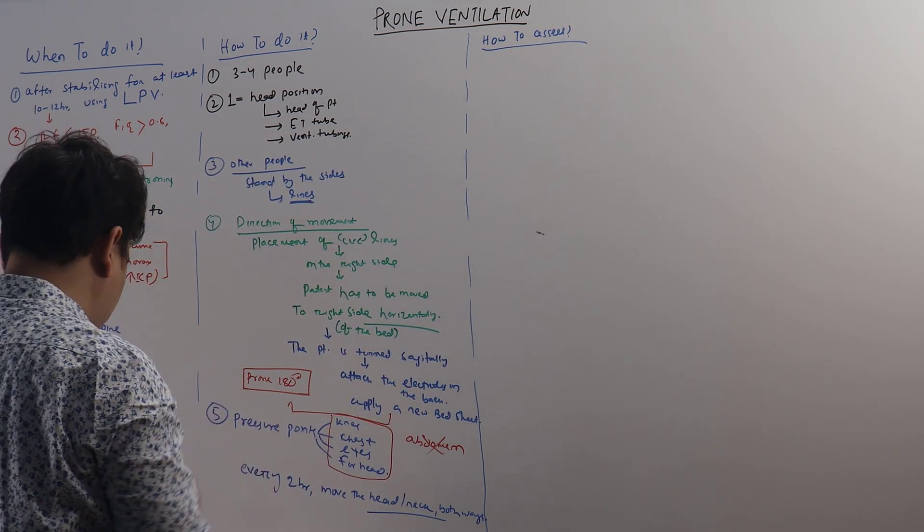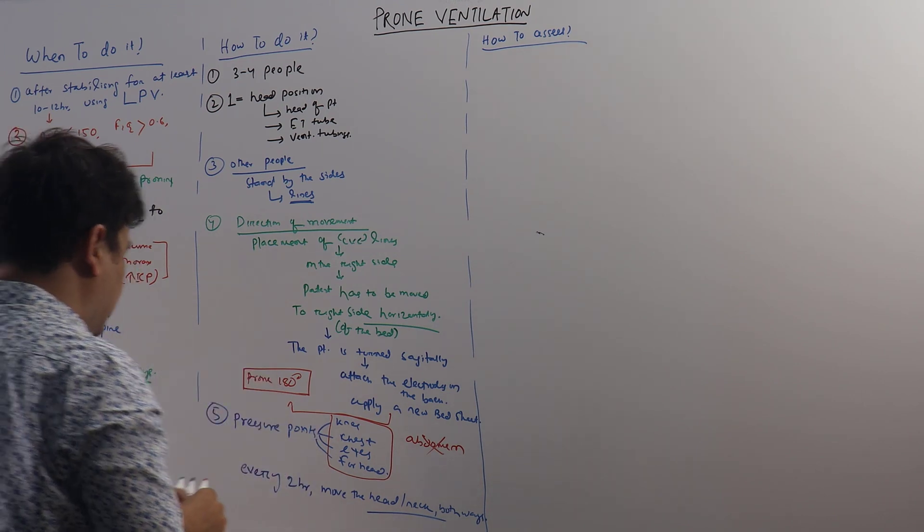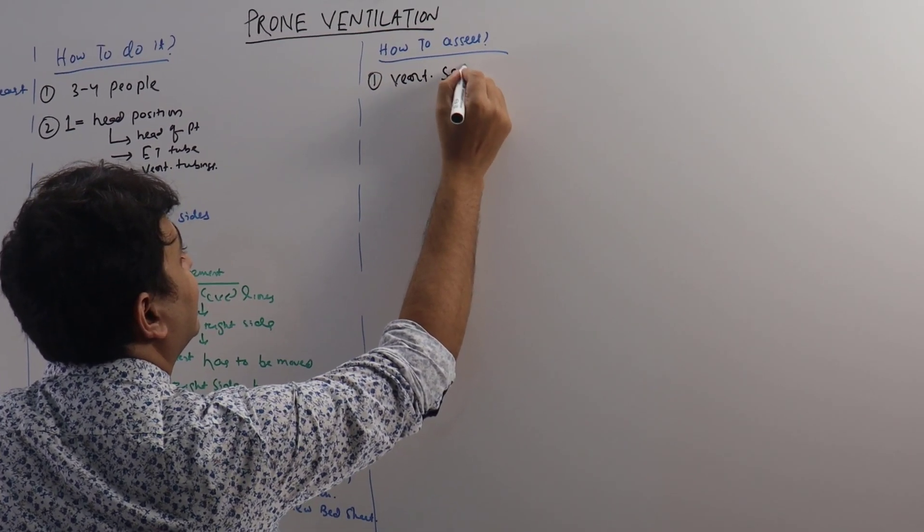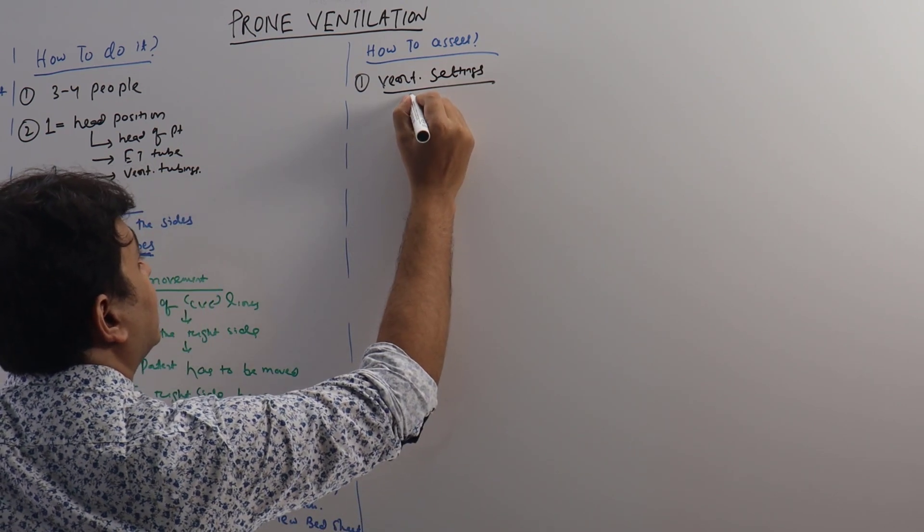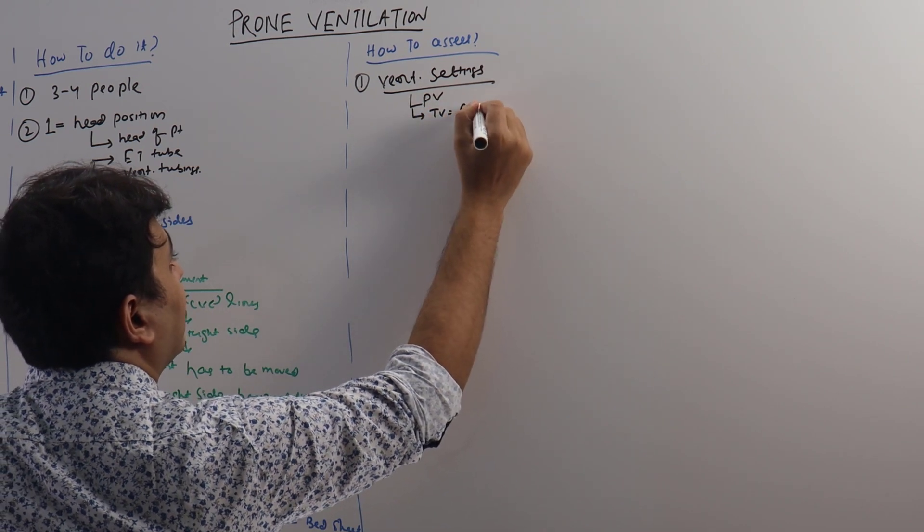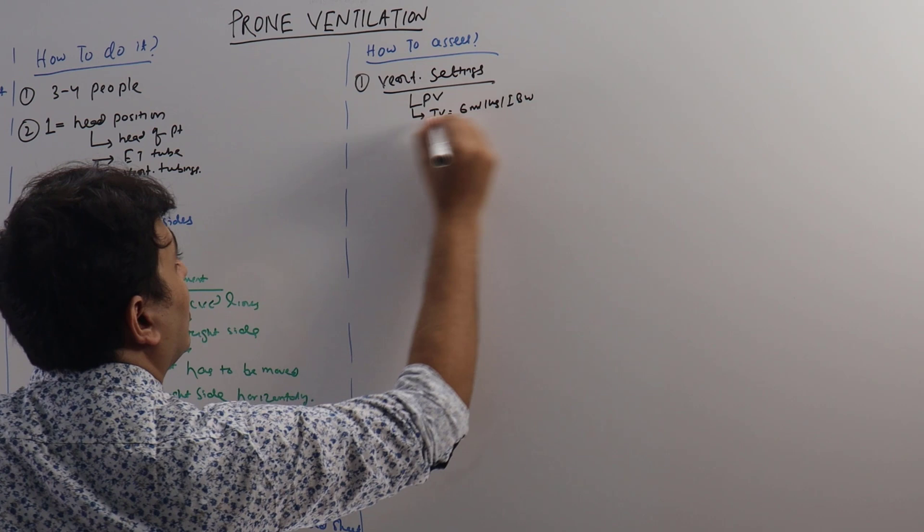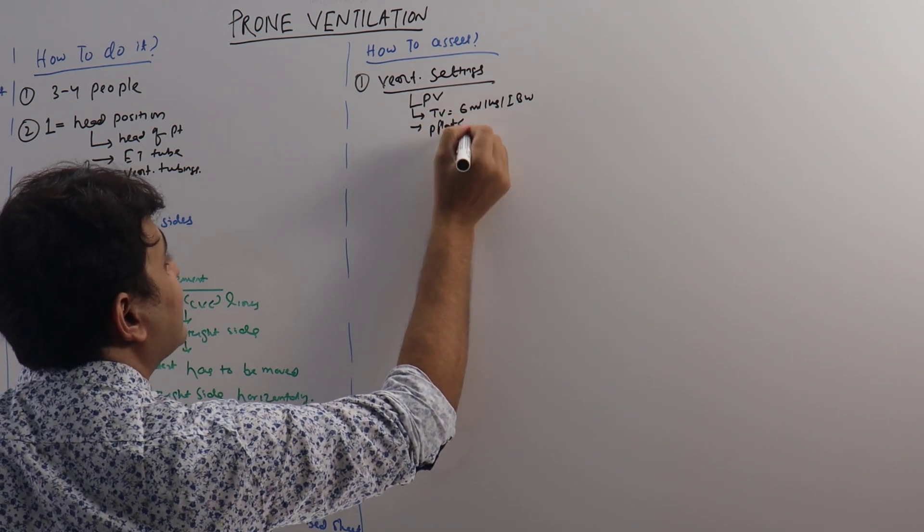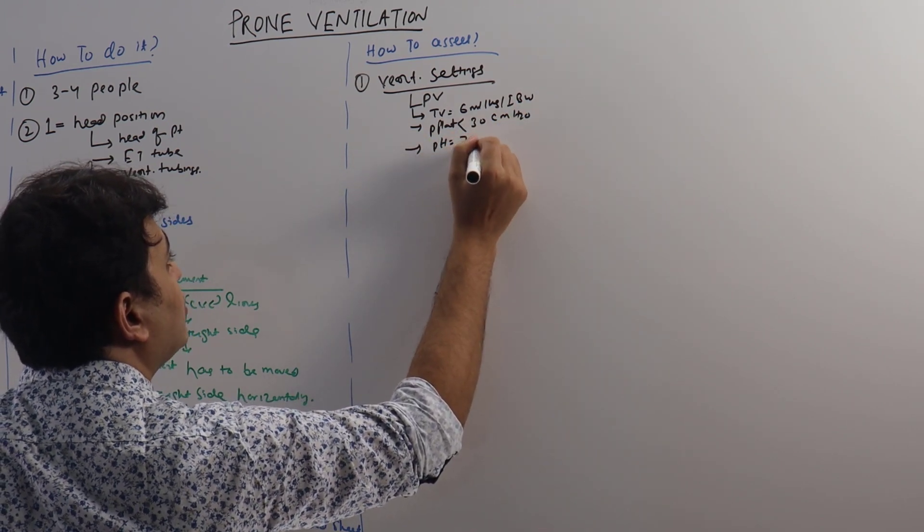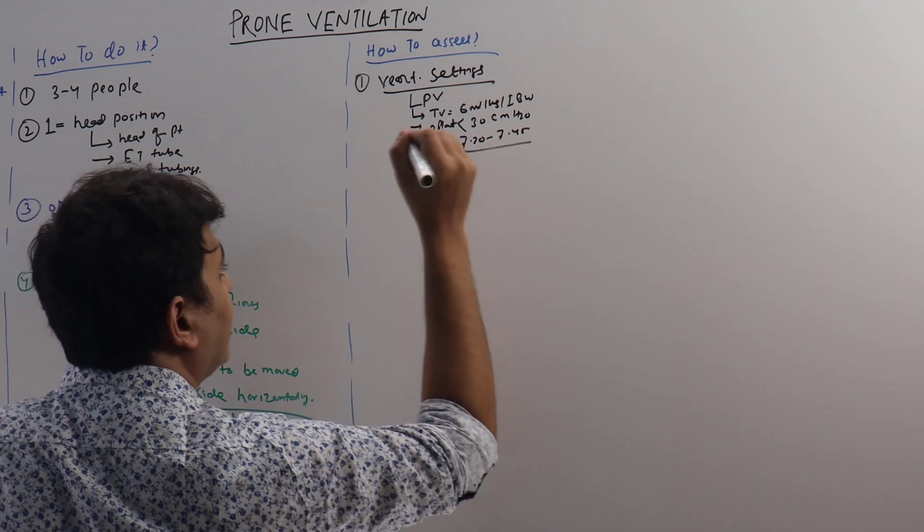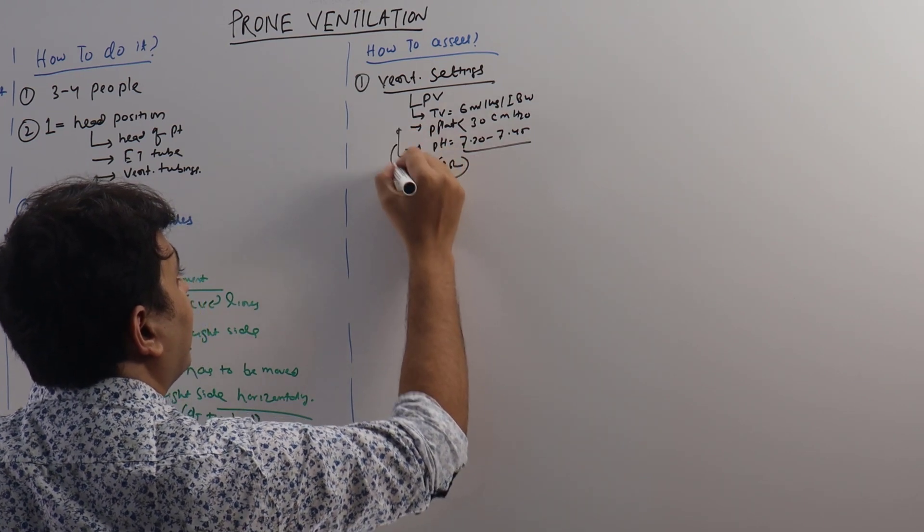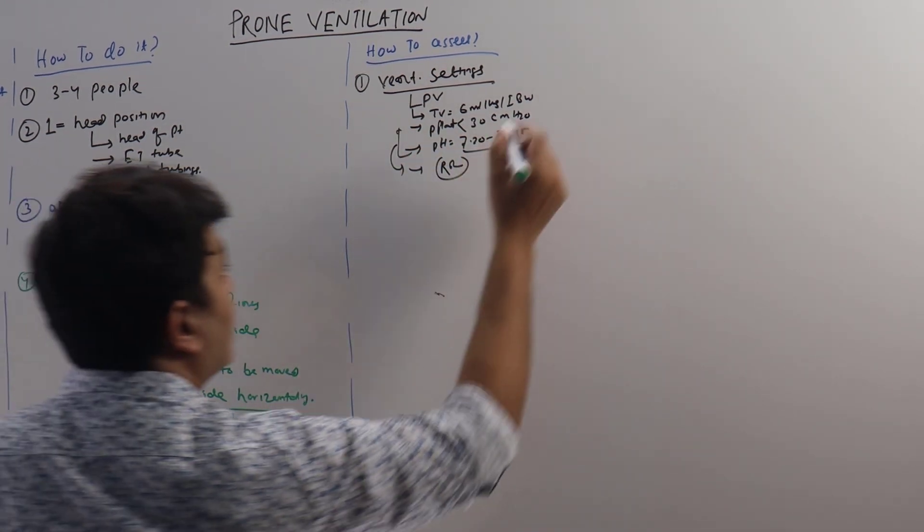Now, how to assess the patient when it is prone? The third question is how to assess. Before putting the patient on prone ventilation, during prone ventilation, what are the ventilator settings? The ventilator settings will be as discussed in our previous discussion: lung protective ventilation. A tidal volume of 6 ml per kg of ideal body weight. We have to target a P-plateau of less than 30 cm water. We have to target a pH of 7.20 to 7.45.